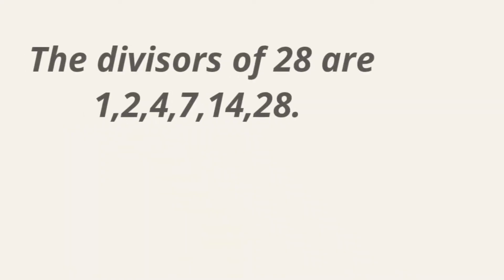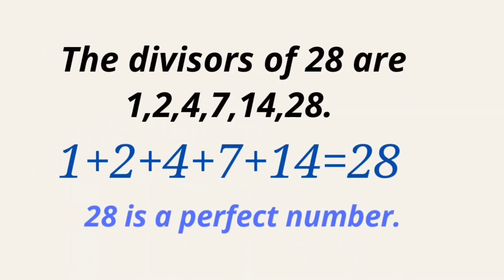The next perfect number is 28. The divisors of 28 are 1, 2, 4, 7, 14, and 28. The sum of 1, 2, 4, 7, and 14 is 28. Therefore, 28 is a perfect number.